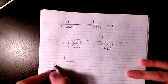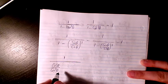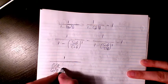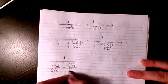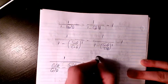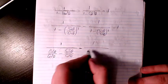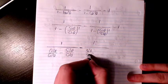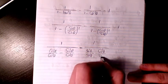For the next step, I convert 1 to cosine squared theta divided by cosine squared theta. Because after that, I'm going to have a common denominator. Same thing here, because the denominator is sine — I convert 1 to sine squared theta divided by sine squared theta, minus cosine squared theta divided by sine squared theta.